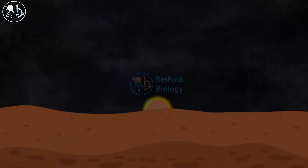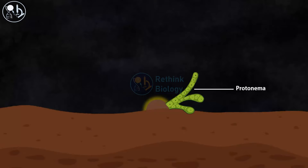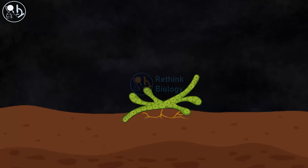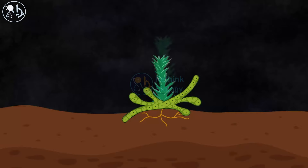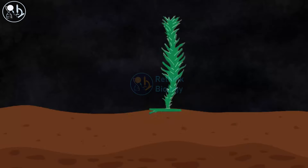Once a spore falls onto moist ground, it gives rise to a filamentous structure called protonema. Root-like structures known as rhizoids are also produced. The protonema gives rise to a bud, which is the leafy structure. The bud grows and finally develops into a full-grown haploid gametophyte, and thus the cycle continues.